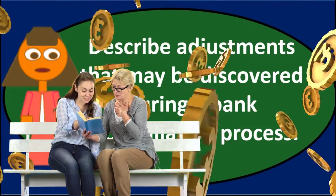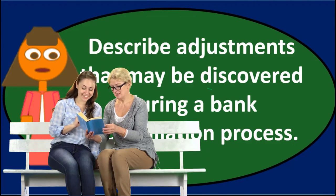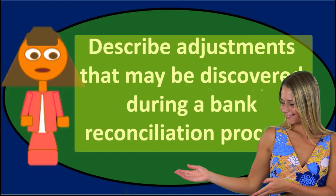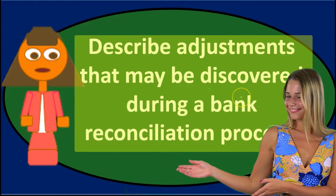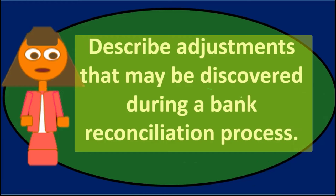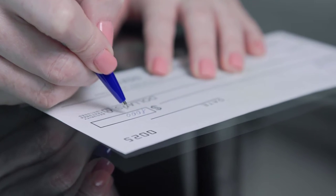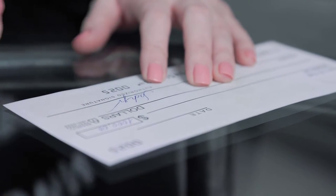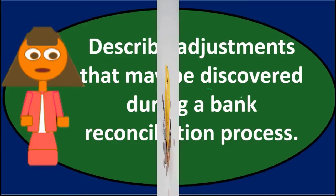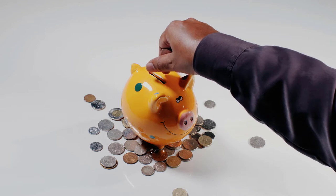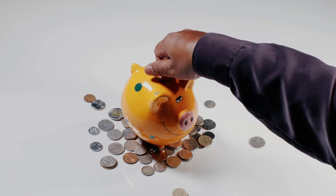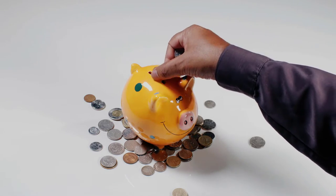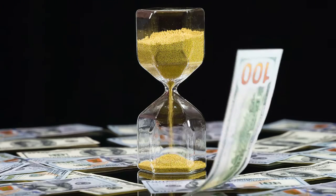If something is on our books but not on the bank statement, that's probably because it's just outstanding. For example, if we wrote a check and it's on our books but hasn't appeared on the bank statement yet, the bank simply doesn't know about it because it hasn't cleared. That's not really an adjustment — we just note it in the bank reconciliation to reconcile the bank balance to the book balance. Similarly, a deposit on our books not yet on the bank statement is just an outstanding deposit; our books are correct, so we just note it.